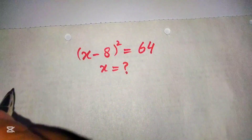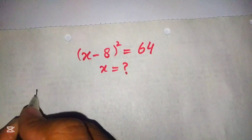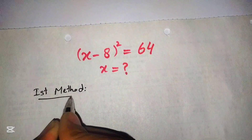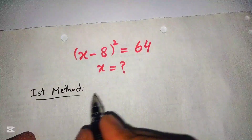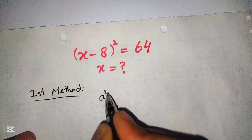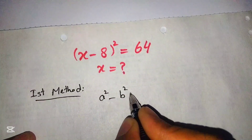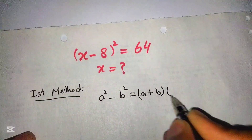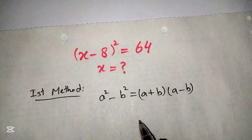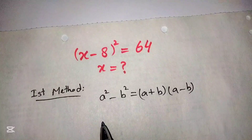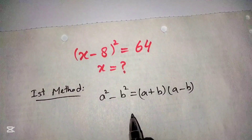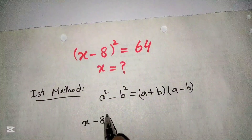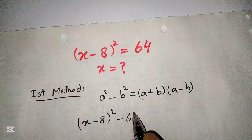Let us start with the first method. In the first method, we will use the formula a² - b² = (a + b)(a - b). This is the basic mathematical formula we are going to use to find the value of x for the given equation. Applying this formula, we first rearrange the equation as (x - 8)² - 64 = 0.